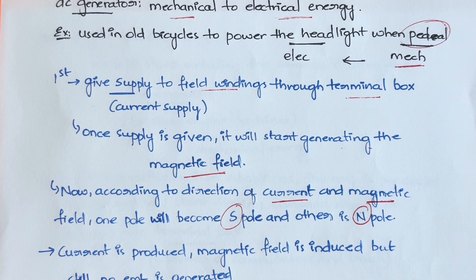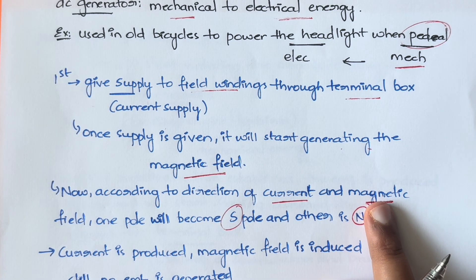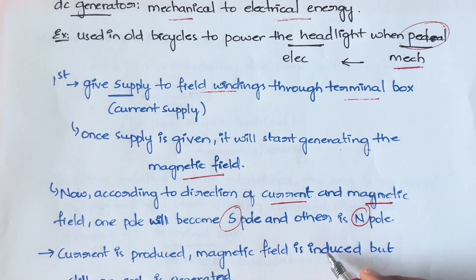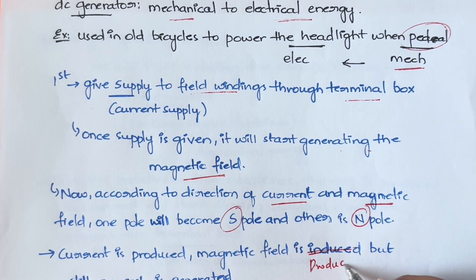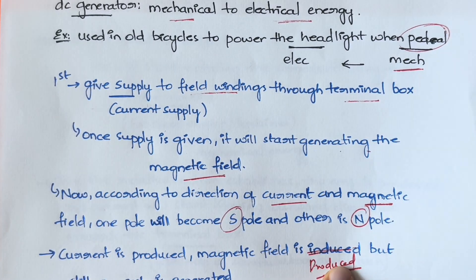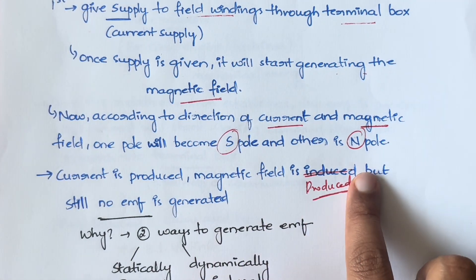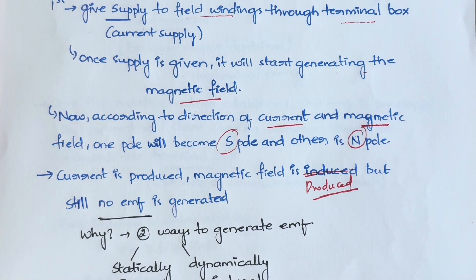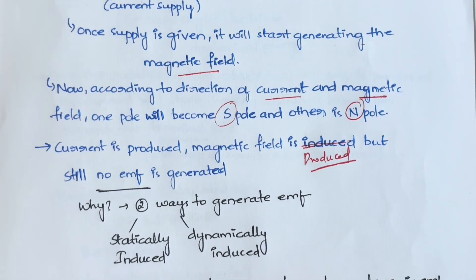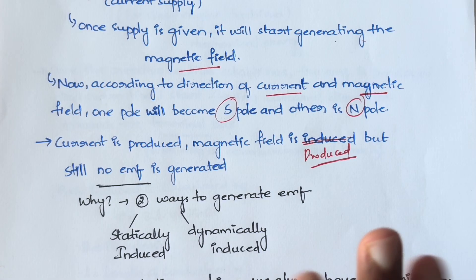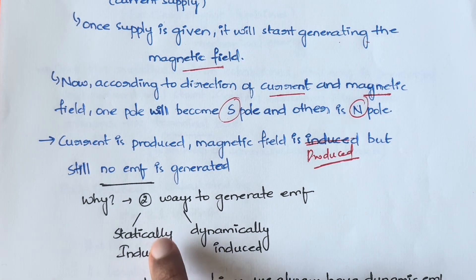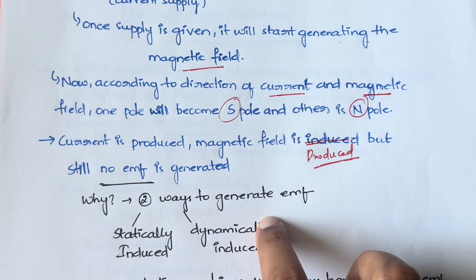So the poles are created, current is produced, and magnetic field is also produced. But still there is no EMF in this scenario. To generate EMF, you need two scenarios: it should be either statically induced or dynamically induced.